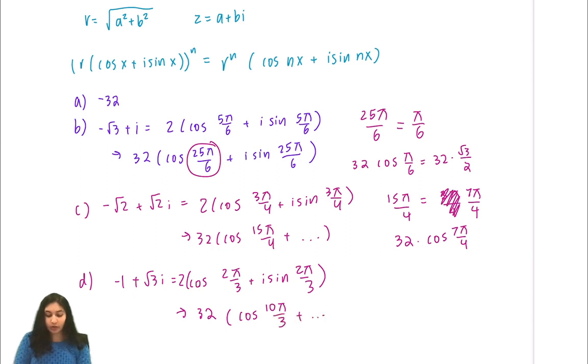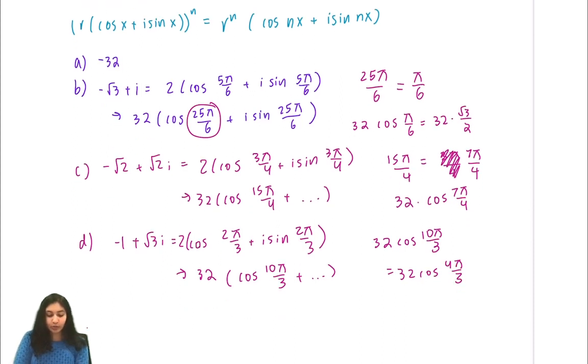And then again, this is stuff we don't care about. Our real part is 32 times the cosine of 10π over 3, which is equivalent to 32 cosine of 4π over 3.